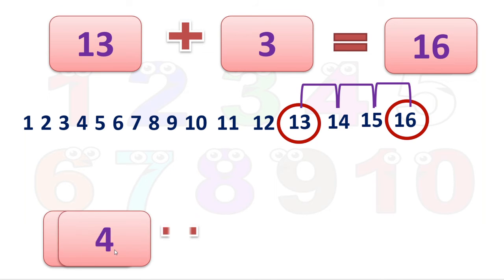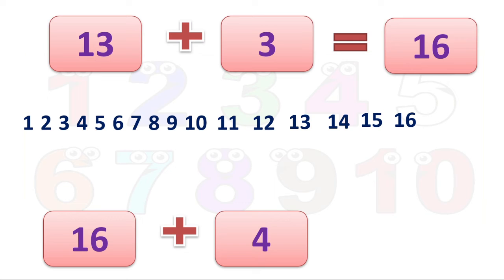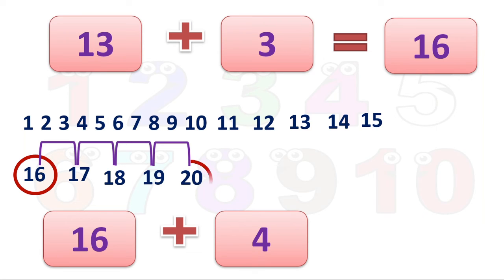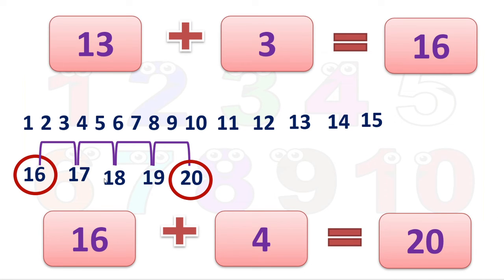One more: 16 plus 4 is equal to how much? We already have 16. We have to add 4. After 16: 17 — first number, 18 — second number, 19 — third number, and 20 — the fourth number. We got 20 as our answer, because we counted 4 numbers in the forward direction, as we want to add 4 to 16.